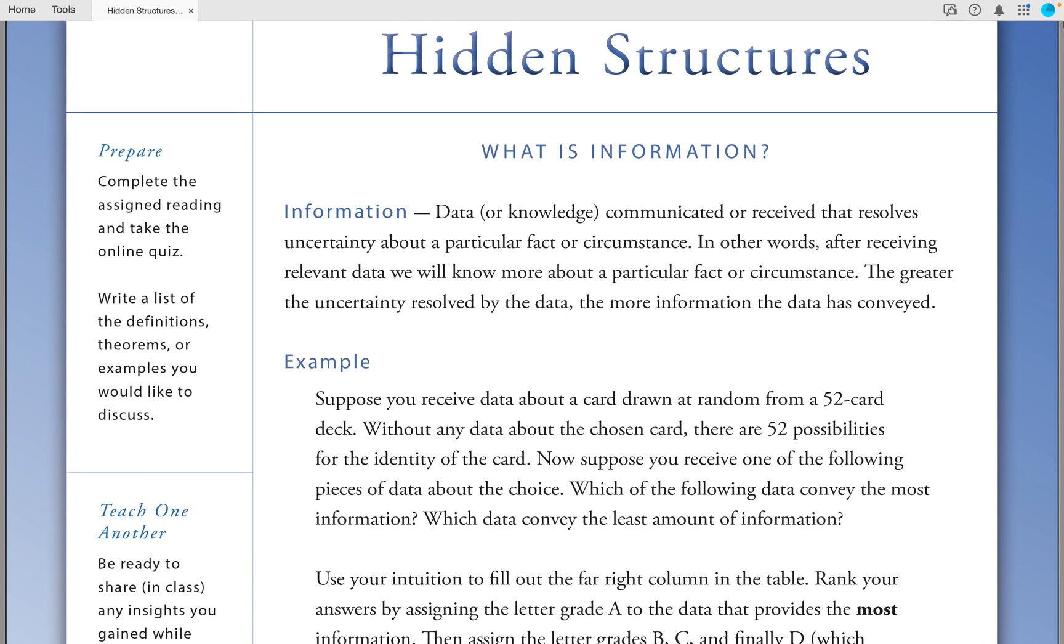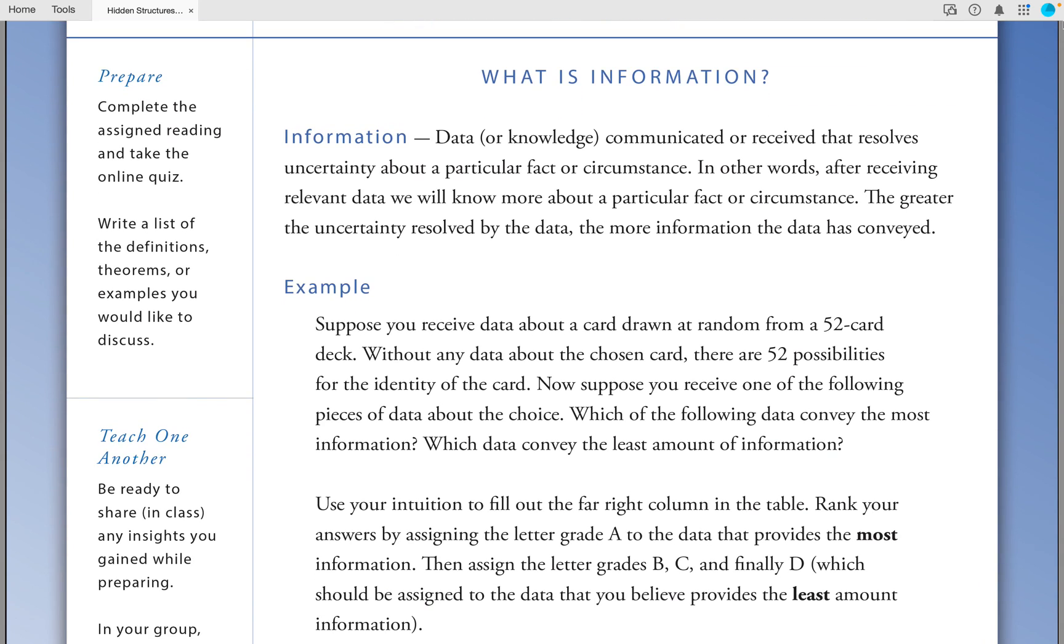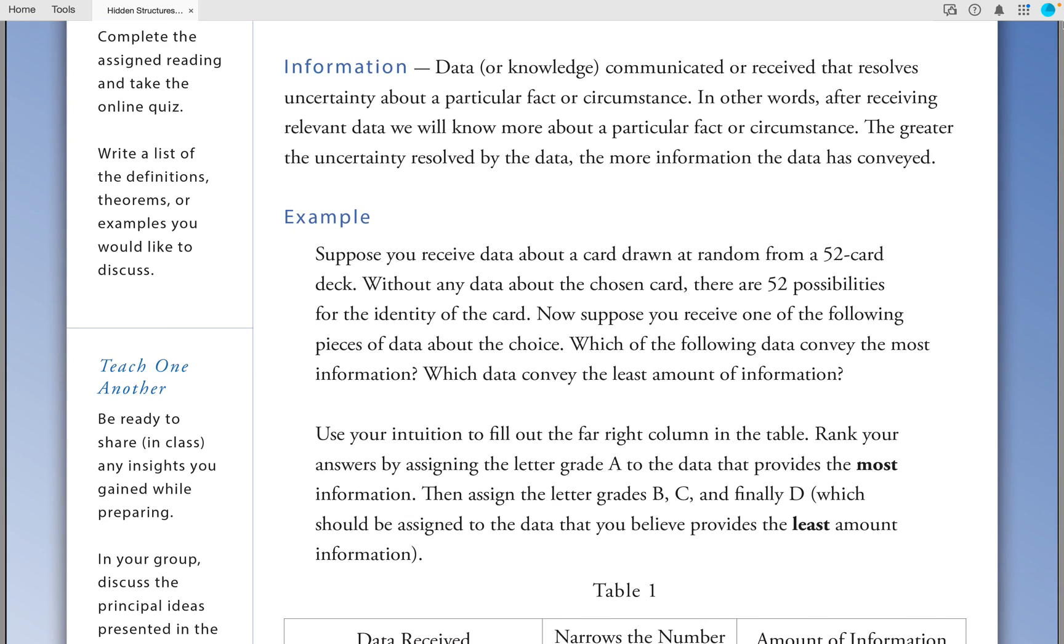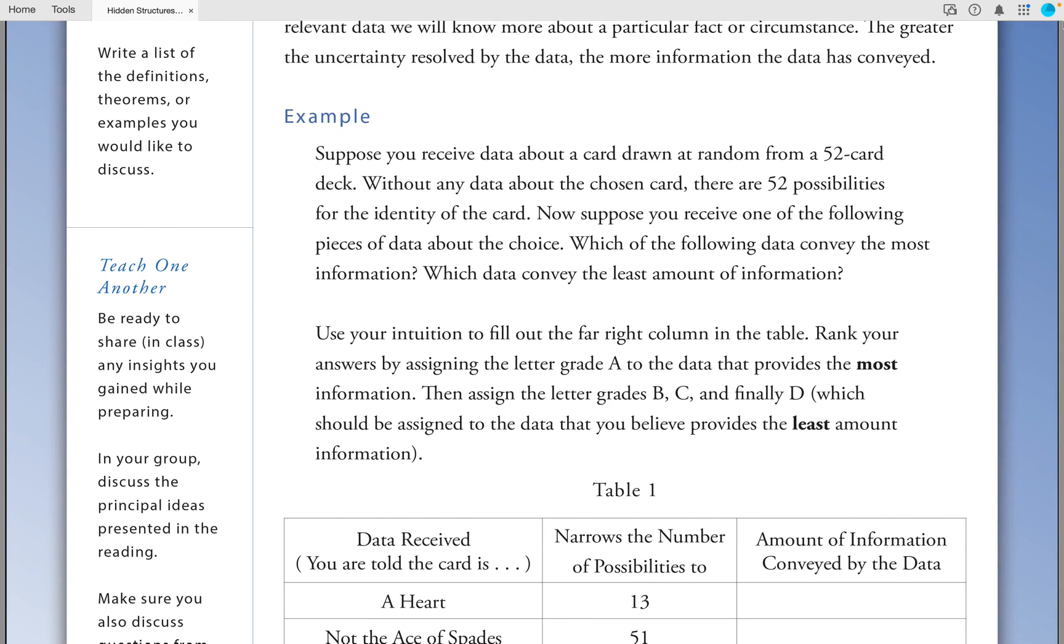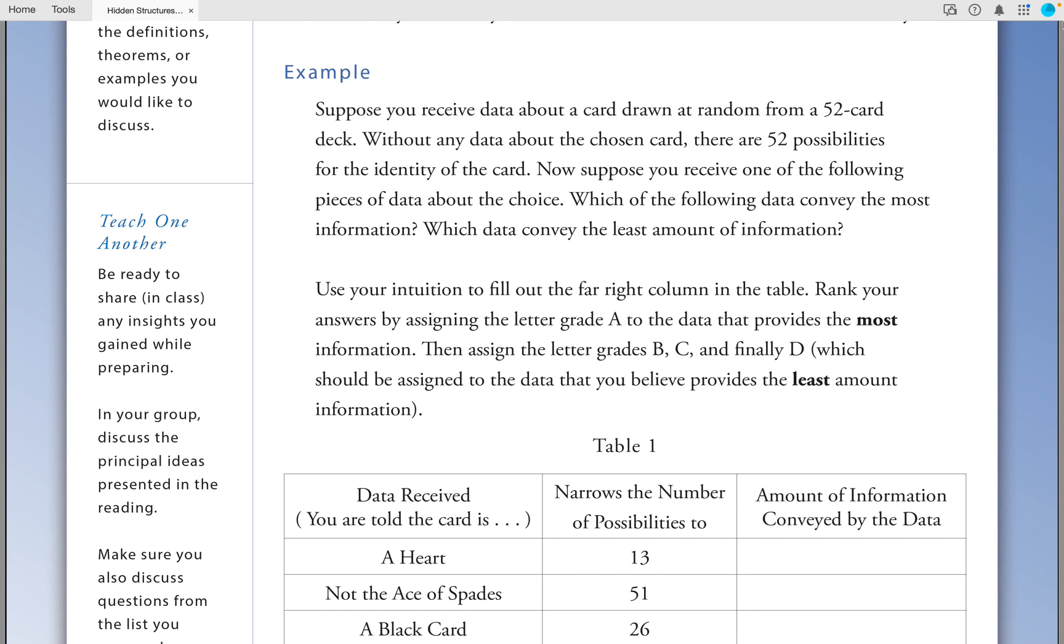Example: Suppose you receive data about a card being drawn at random from a 52-card deck. Without any data about the chosen card, there are 52 possibilities for the identity of the card. Now, suppose you receive one of the following pieces of information about the choice. Which of the following data convey the most information? And which data convey the least amount of information?